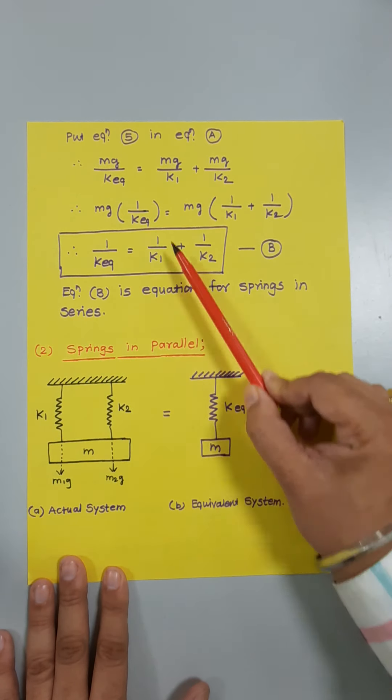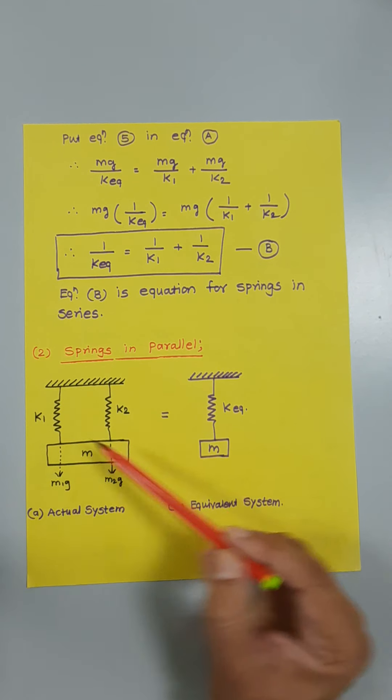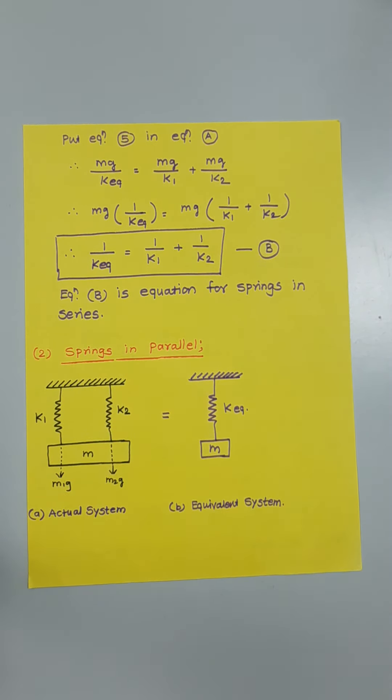The second possibility is springs in parallel. Here, two springs k1 and k2 are located in parallel — one end of both springs is attached to the fixed surface and the other end of both springs is attached to mass m. The force in spring one is m1g and the force in spring two is m2g. The parallel springs are represented equivalently as a single spring k equivalent attached between the fixed surface and the mass.